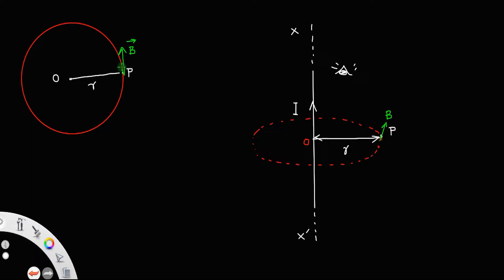Also, take a small length DL at the point P. Now, let this be the direction of DL.